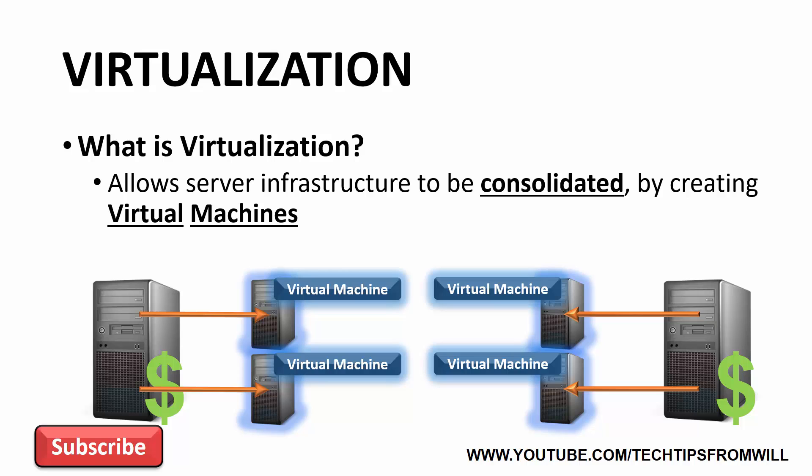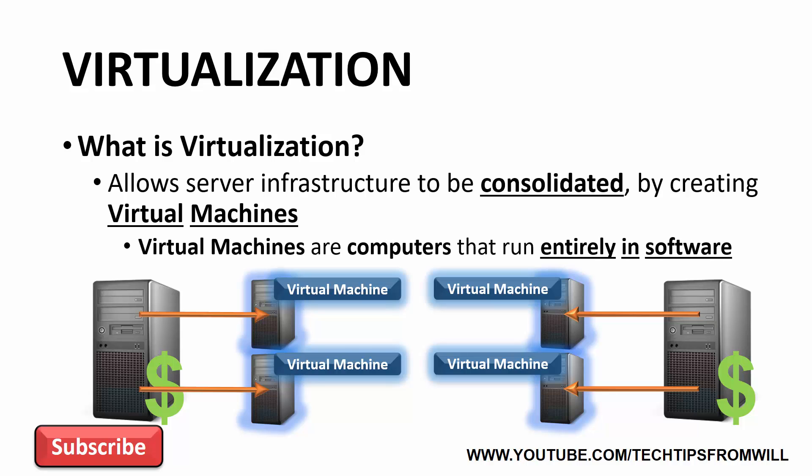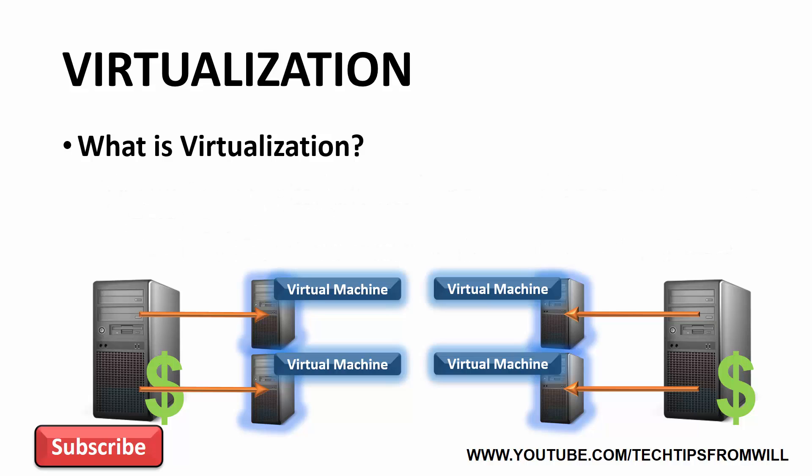With virtualization, the administrator can consolidate the amount of physical hardware in the server room and save money by creating virtual machines. Rather than having six physical servers, you could, for example, have two really powerful physical servers and four virtual machines that run on those physical servers. Virtual machines are essentially computers that run entirely in software, allowing the administrator to make the best use of their hardware by running multiple servers side-by-side on the same physical hardware at the same time.